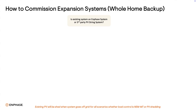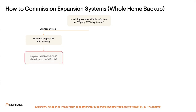The commissioning flow for expansion systems with batteries varies depending on whether the system has backup capabilities or is grid-tied without backup. This decision tree shows the commissioning flow for whole-home backup expansion systems. First, determine if the existing system is an Enphase system or a third-party system. If it's an Enphase system, open the existing Site ID in the installer app and add a gateway. Then determine if it's a NEM multi-tariff system in California. If yes, set load control to NEM MT. If no, set load control to PV shedding. The NEM multi-tariff and load control settings are critical to the proper operation of the system and compliance with the NEM multi-tariff rules of California utility companies.